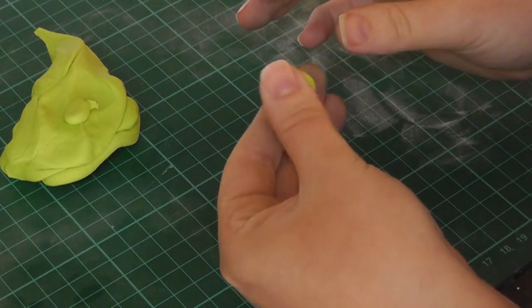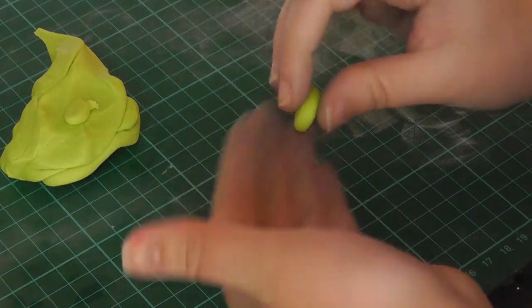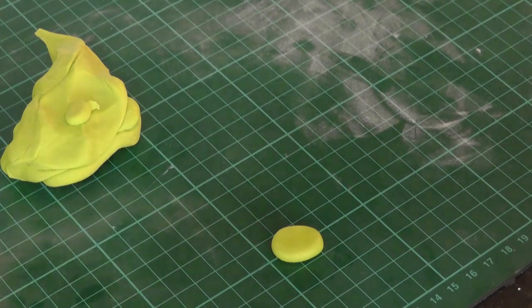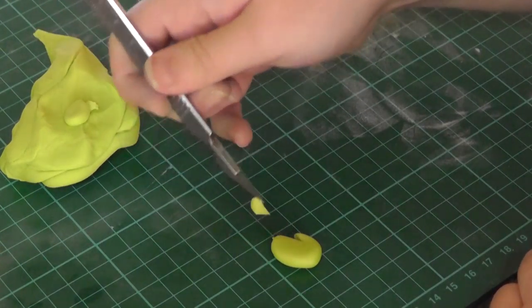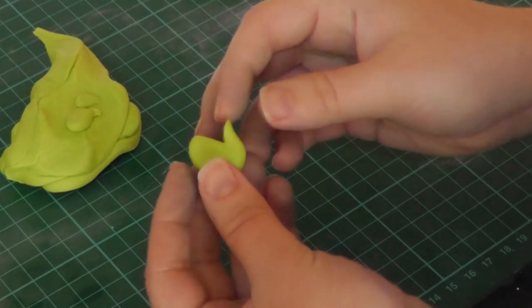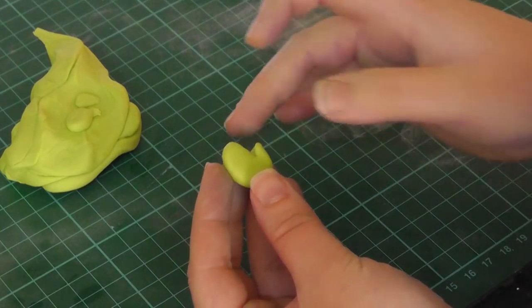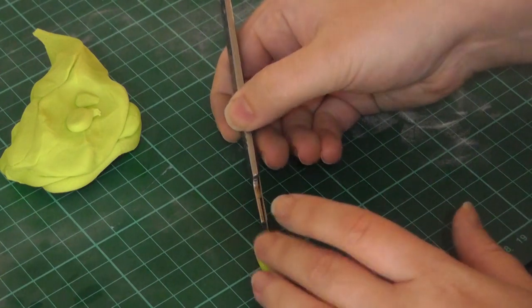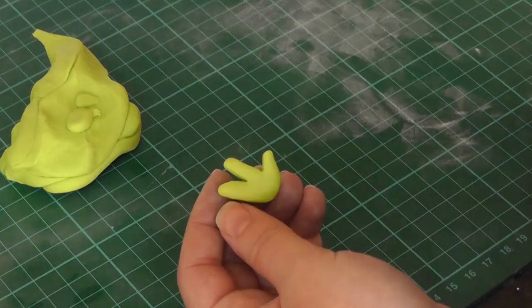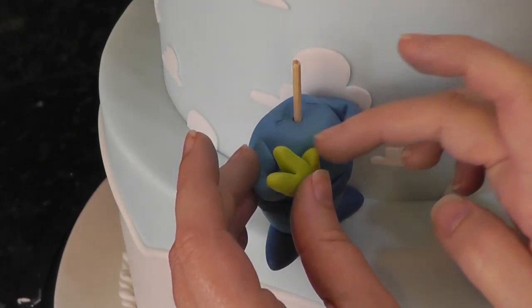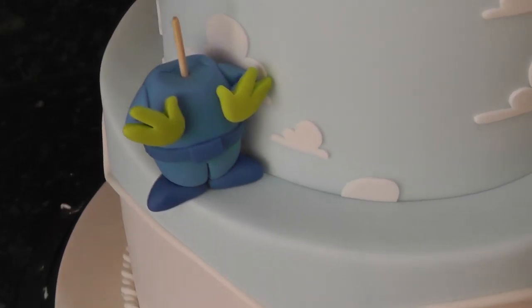Unfortunately, Renshaws have stopped making my favorite lime green. But you can make it by mixing together yellow paste with a touch of Lincoln green paste. Cut out a notch from the hand to create a thumb. Then cut the longer part into two fingers. Easiest hands ever. Stick these against the body with the fingers facing slightly outwards.